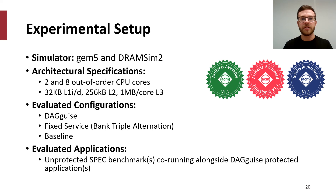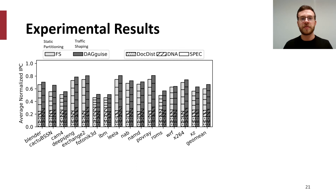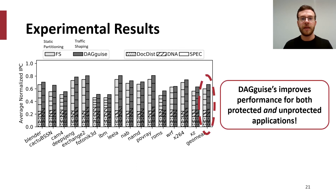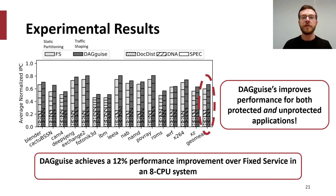Our performance evaluation consists of a GEM5 and DRAMSIM2 model simulating two and eight-core CPU environments. We evaluate the performance of the DAG-Eyes shaper and compare it to fixed service and insecure baselines. We measure the normalized system-wide IPC of unprotected SPEC benchmarks co-located with DAG-Eyes-protected example applications. DAG-Eyes improves upon system-wide performance compared to fixed service across the entire system, increasing the IPC of both unprotected and protected applications—specifically, we observe a 12% performance improvement over fixed service.